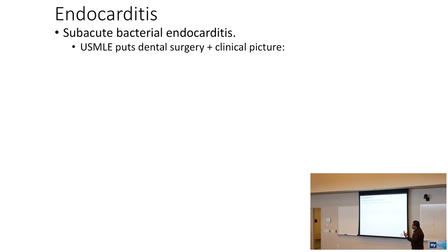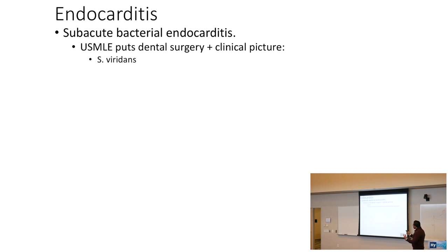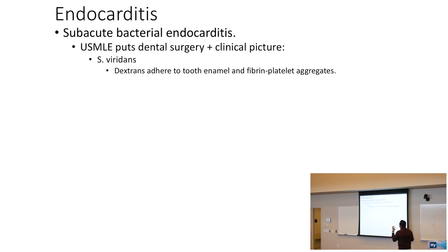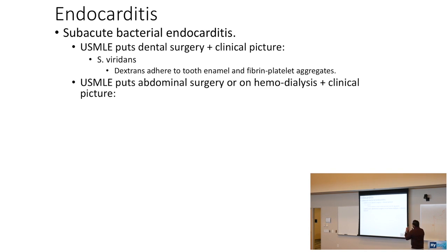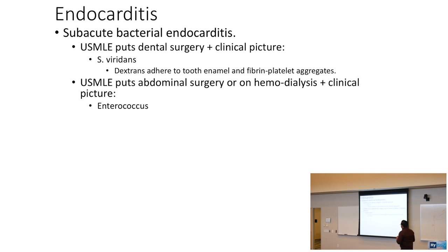With dental surgery, mouth flora penetrates the heart. Strep viridans produces dextrans that adhere to tooth enamel and cause fibrin-platelet aggregates on the heart. If the clinical picture involves abdominal surgery or hemodialysis, the USMLE wants you to answer enterococcus — that is really important to know.